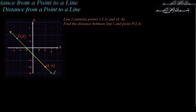Line L contains points negative 5, 3 and 4, negative 6. And then it says find the distance between line L and the point 2, 4. So let's try to draw that point out — the ordered pair is 2, 4. Our job here is to find the distance between this point and this line. So how do we go about doing that?